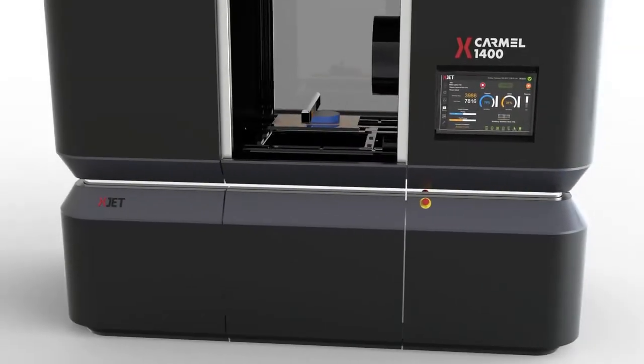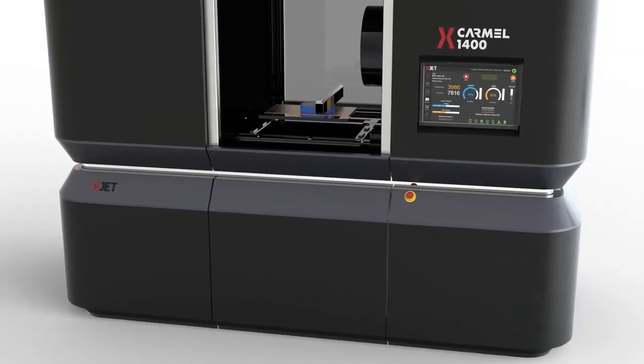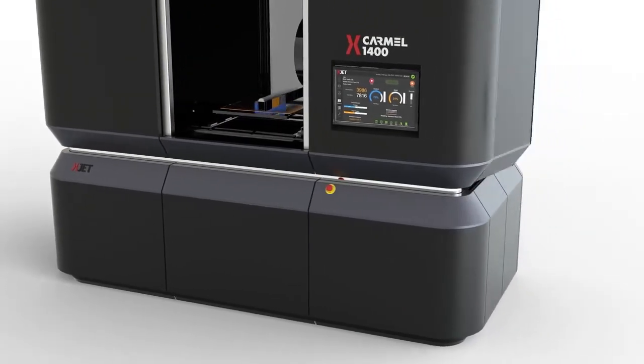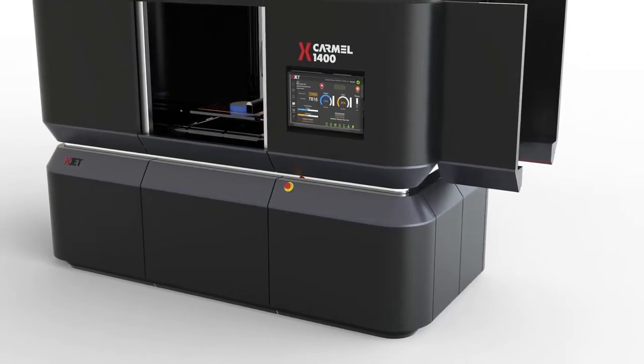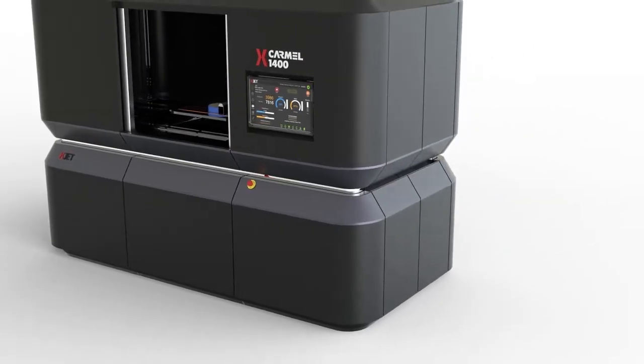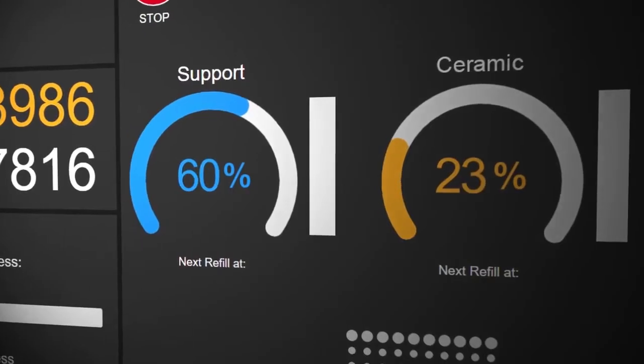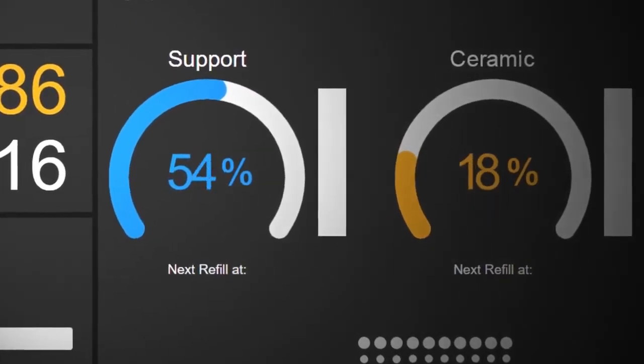So, how does it work? Ceramic materials, packaged within convenient cartridges, are easily and safely loaded by hand into the XJET Carmel AM system. With no need for a powder or liquid vat, the Carmel system uses only the materials required.